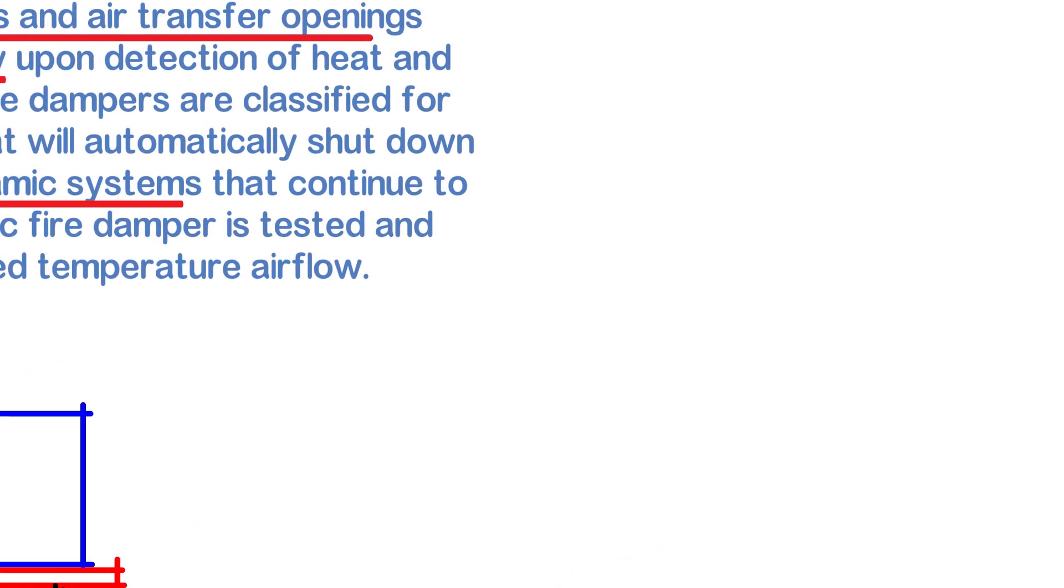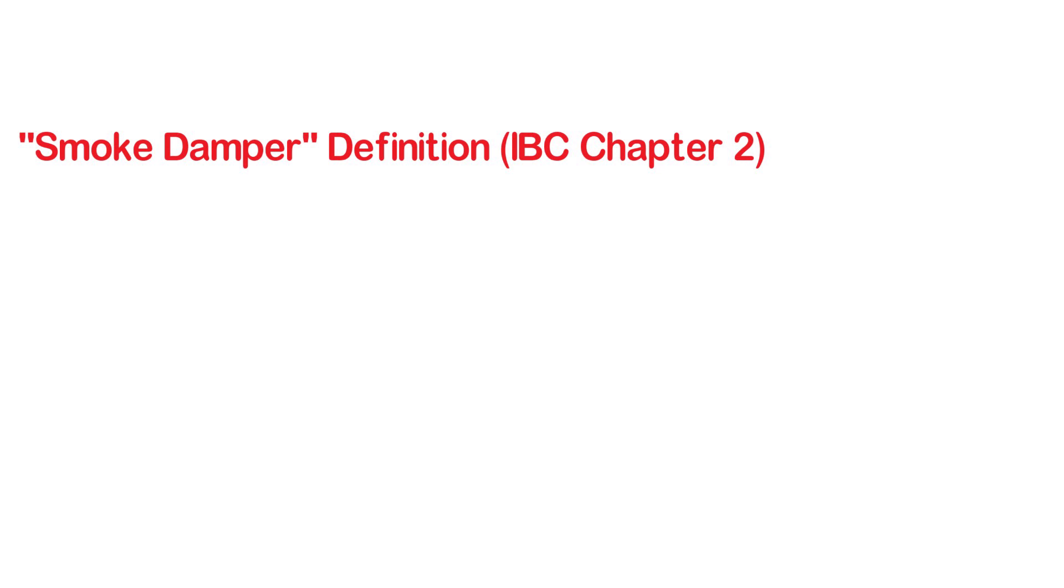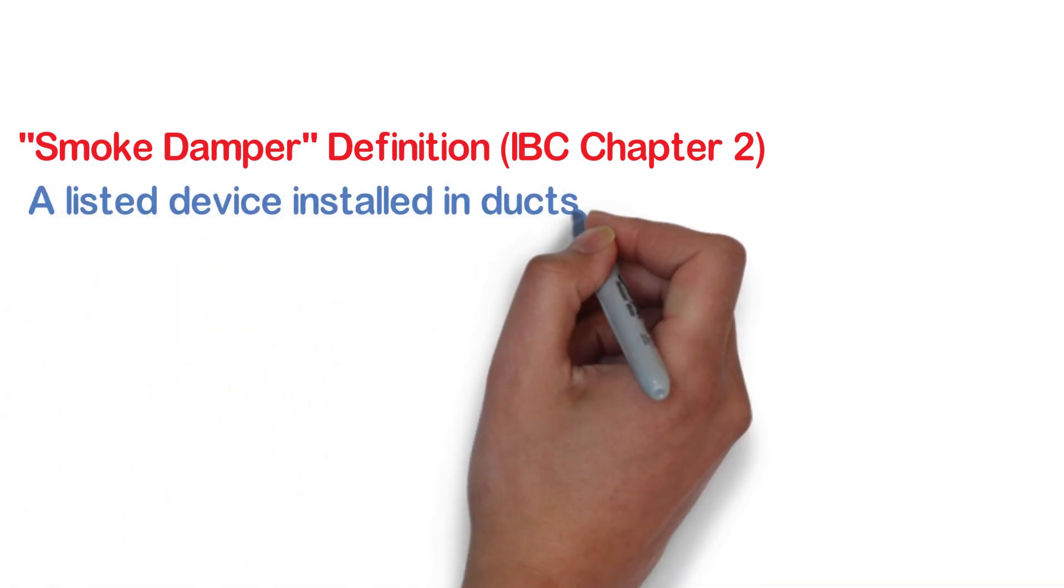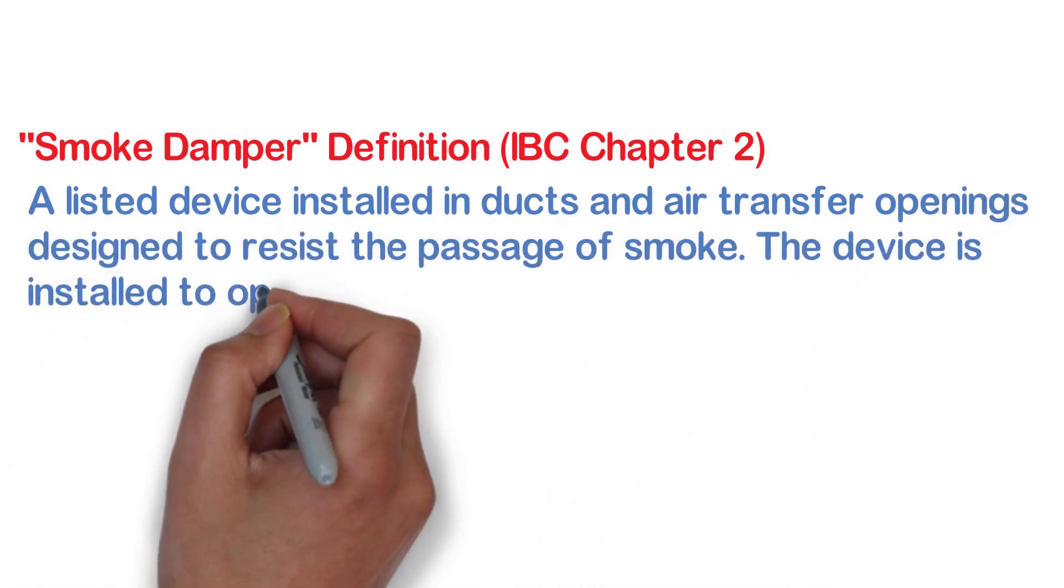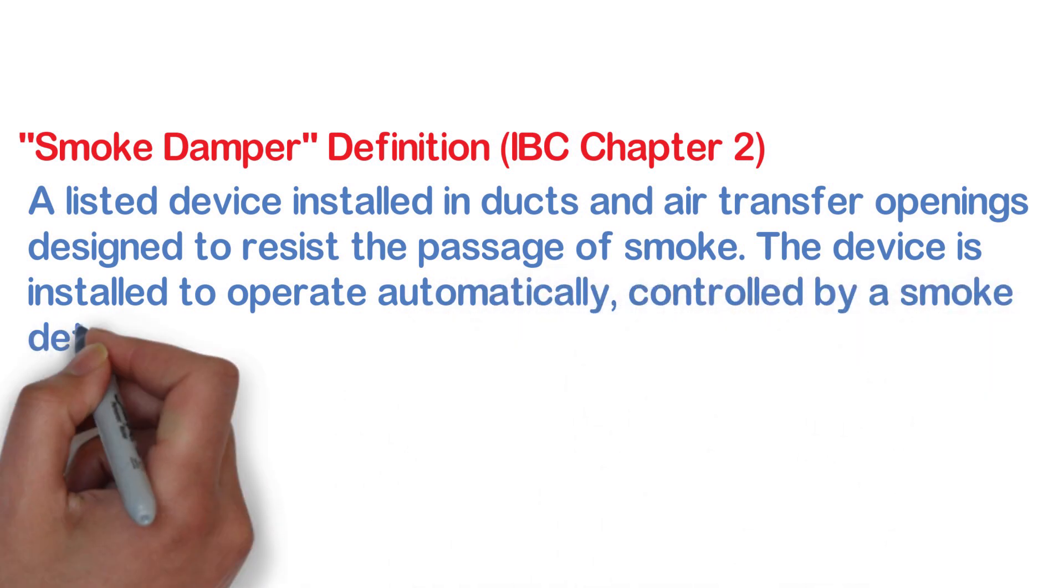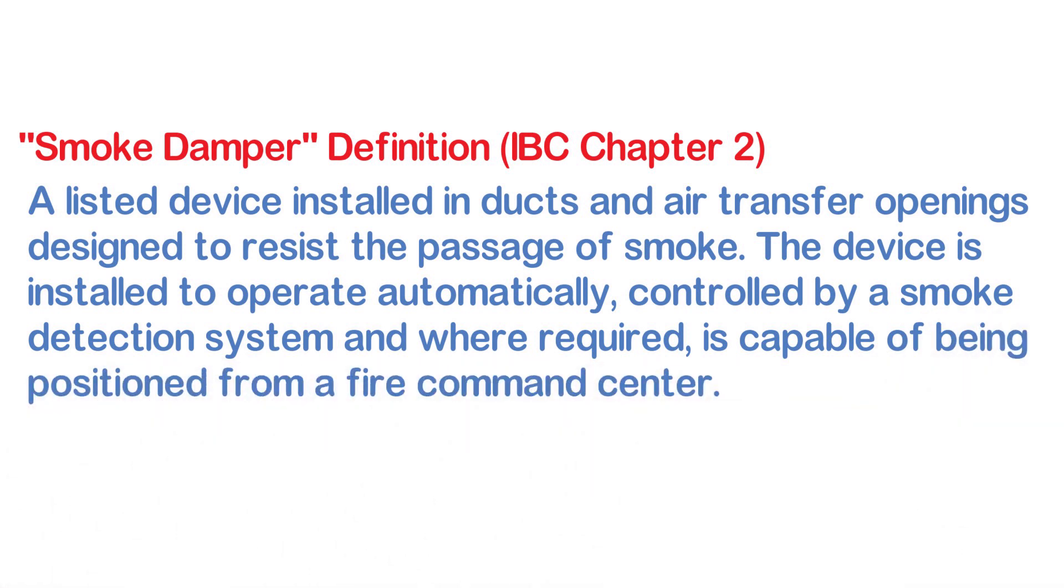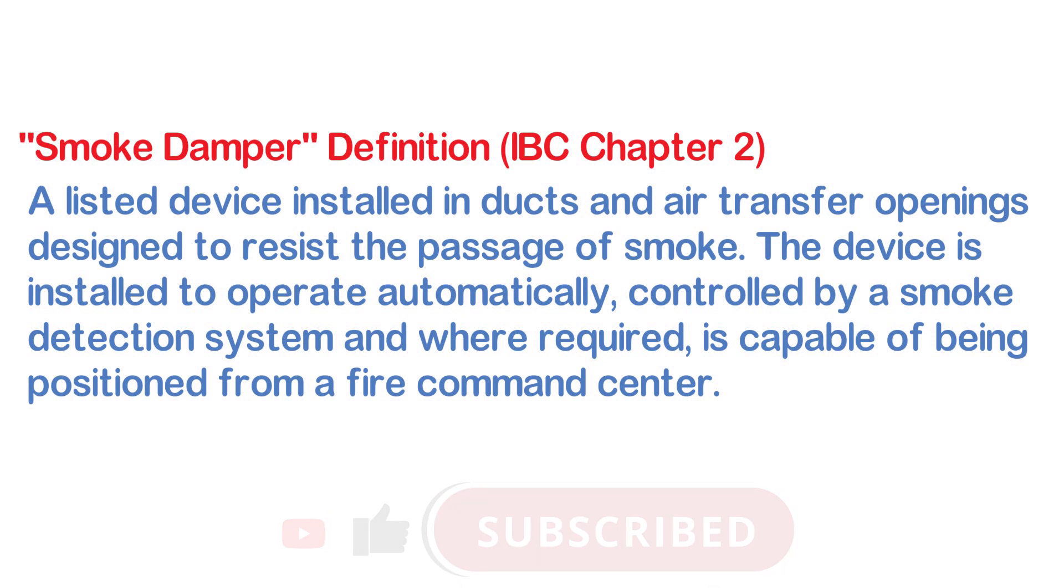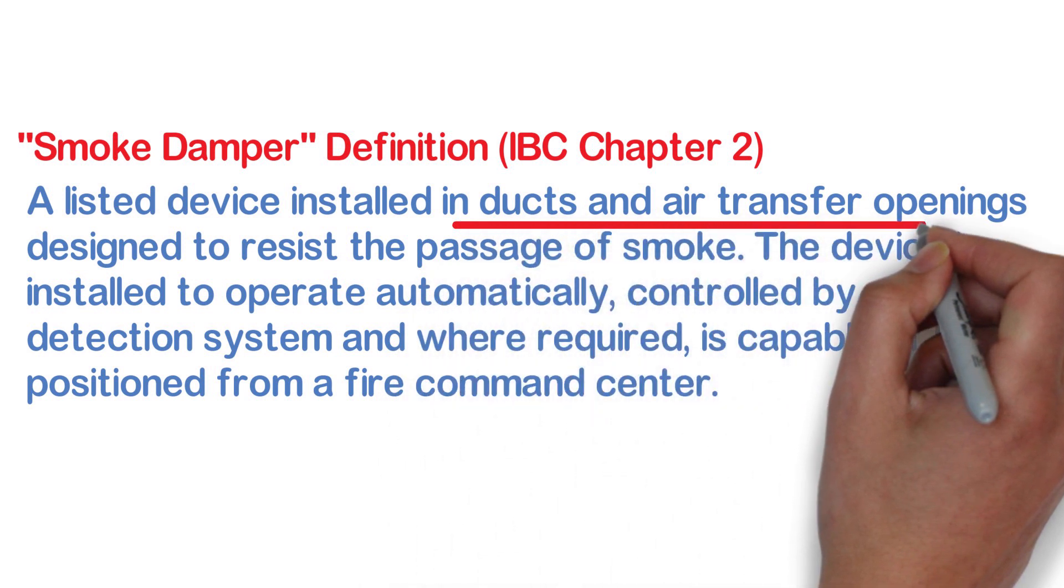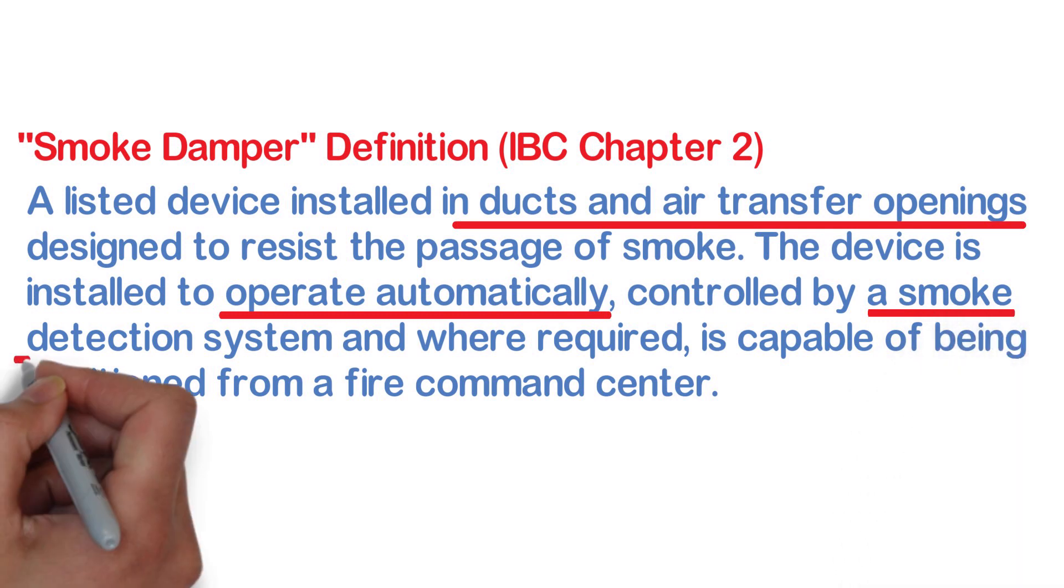But speaking of smoke, this takes us to a smoke damper. A smoke damper works with the same principle. The IBC defines a smoke damper in chapter 2 as a listed device installed in ducts and air transfer openings designed to resist the passage of smoke. The device is installed to operate automatically, controlled by a smoke detection system, and where required, is capable of being positioned from a fire command center. So you can see that this is basically the same type of idea. The definition notes that they can also be in ducts and air transfer openings, just like the fire damper. This system operates automatically and note that here it states that it is controlled by a smoke detection system.